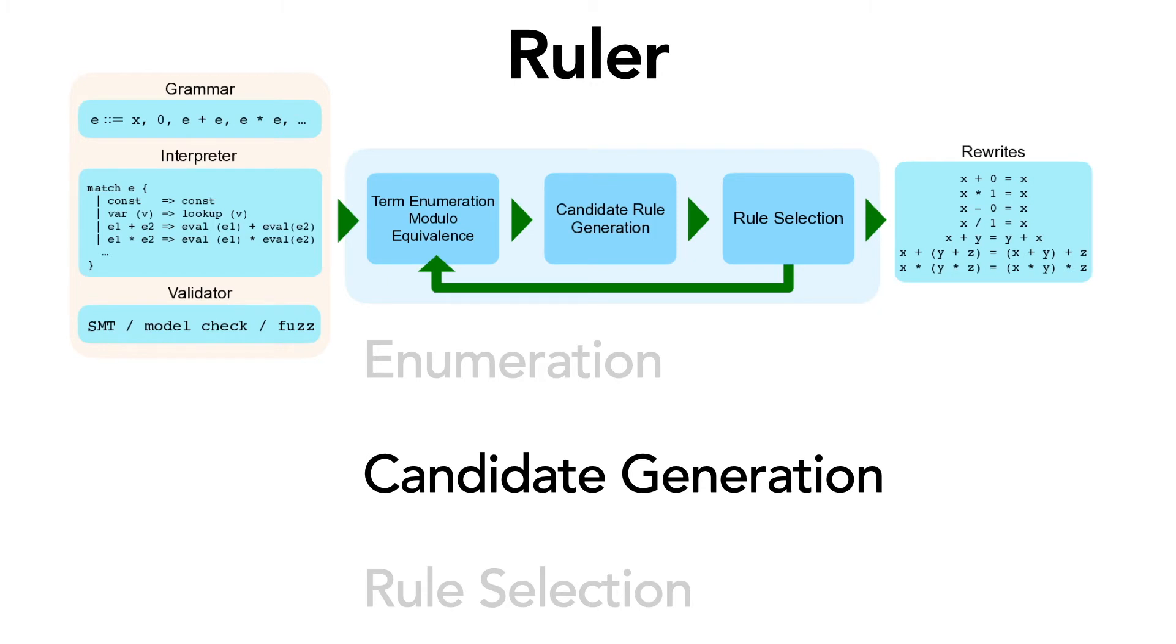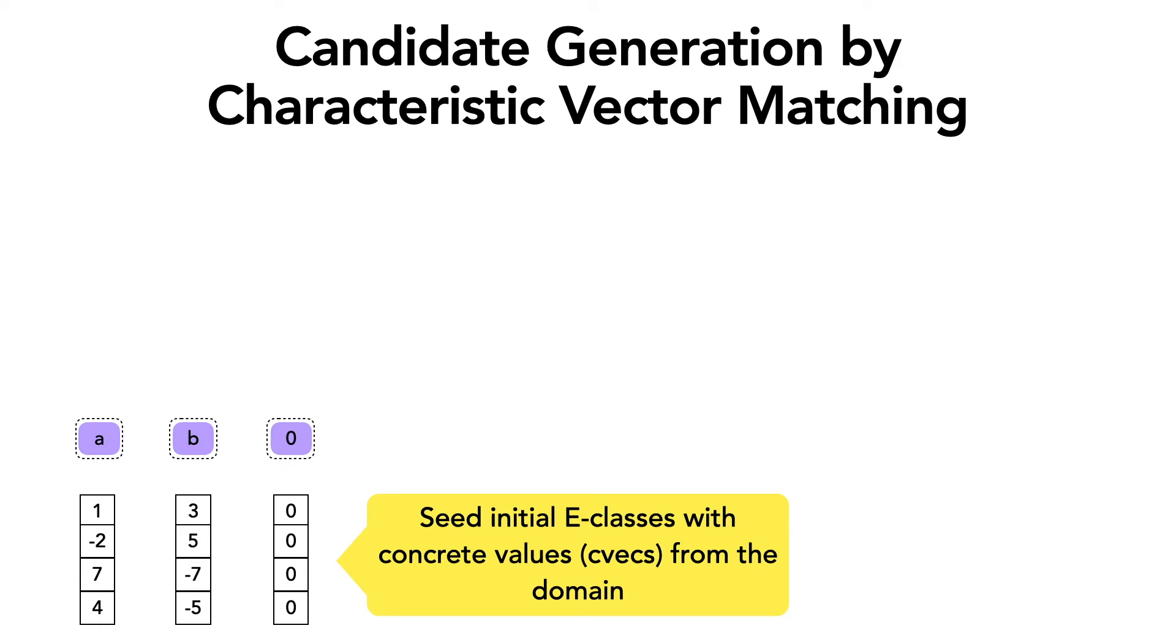To understand that, let's move on to the second phase of Ruler, which is about candidate generation. Ruler generates new candidates by using the concept of characteristic vectors.